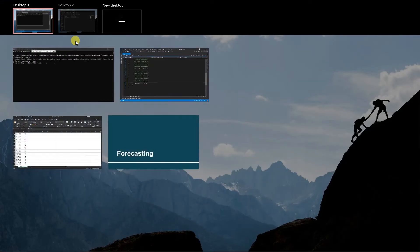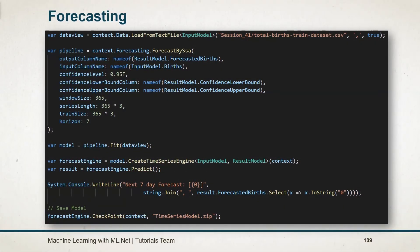Let's see what we learned in this session. Forecasting is used to predict values based on a time series. We need to install the NuGet package for time series. I used the ForecastBySsa trainer, specifying various parameters: window size represents the length of the window on data, train size represents the total training dataset length, and horizon specifies the number of days to forecast. Use CreateTimeSeriesEngine to create the engine, and use the checkpoint method of the time series engine to save the model.